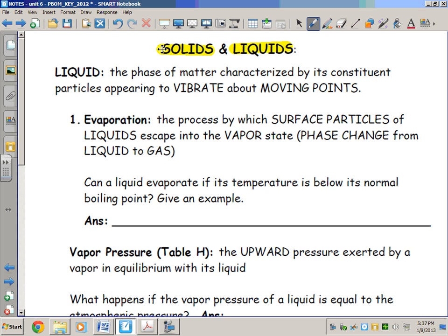Liquids we said before are characterized by particles that vibrate about moving points. We said another way of describing this would be that the particles wiggle around. All particles in every phase vibrate—that never stops. Particles would have to be at absolute zero to stop vibrating. But liquids are characterized by particles that vibrate and move around one another—they don't have to stay in place.